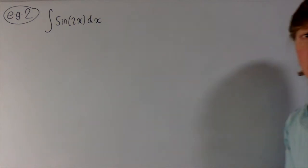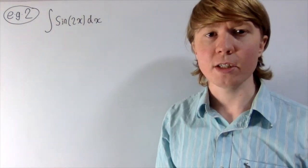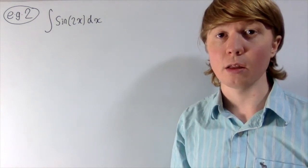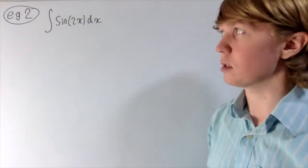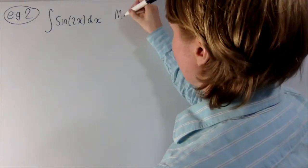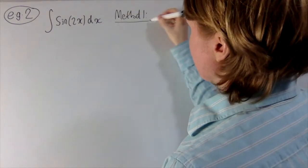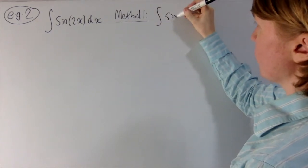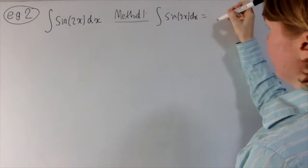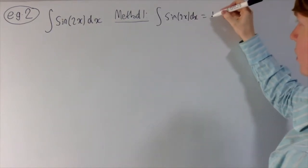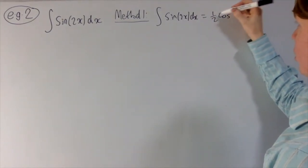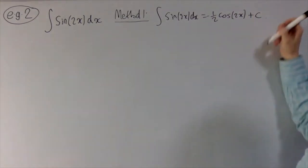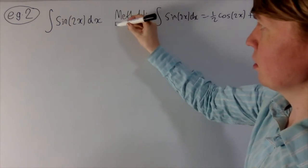For the second example, we're going to look at the integral of sin(2x) dx, and I'm going to show you three different methods to integrate this — they'll all give slightly different constants. Method one is just the simple anti-derivative: you spot sin(2x), and when you integrate this you get minus a half cos(2x) plus some constant c.